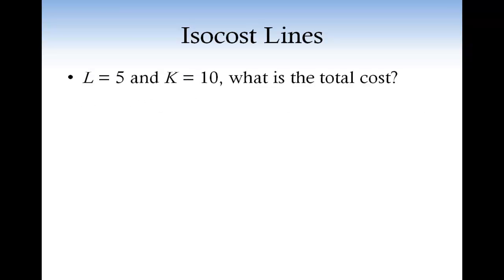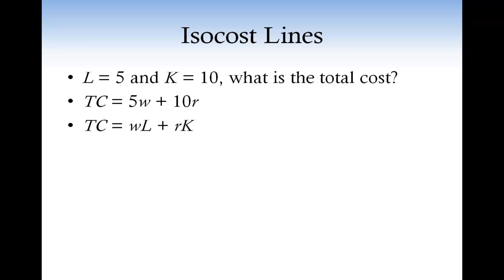If the firm decides to buy five units of labor and ten units of capital, what is the total cost incurred by the firm? If the price of one unit of labor is W and the price of one unit of capital is R, then the total cost of the basket of inputs L equals 5 and K equals 10 is 5 times W plus 10 times R. In general, we can write the total cost of the basket of inputs L, K as W times L plus R times K.